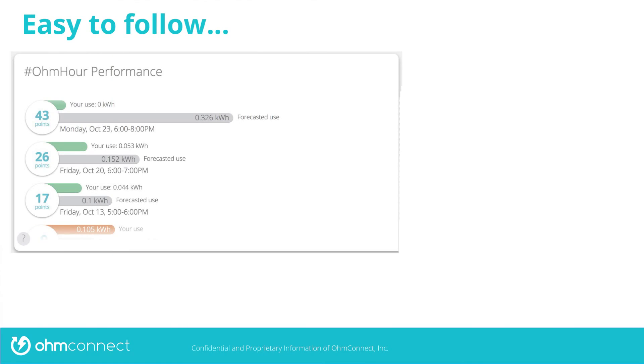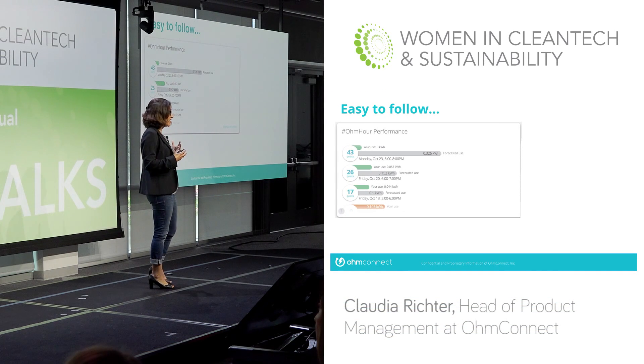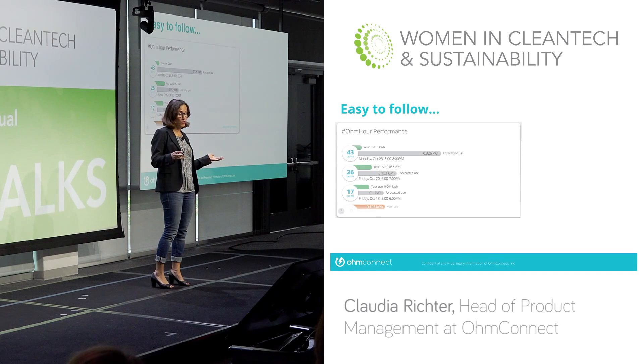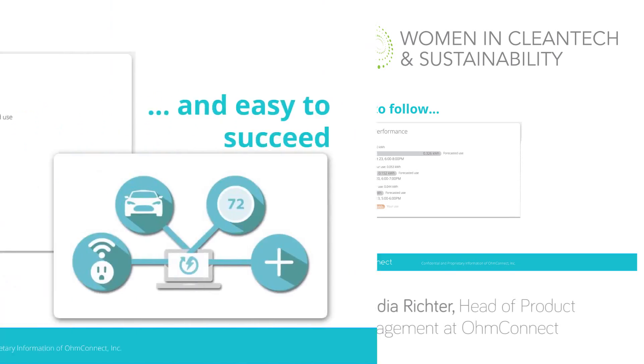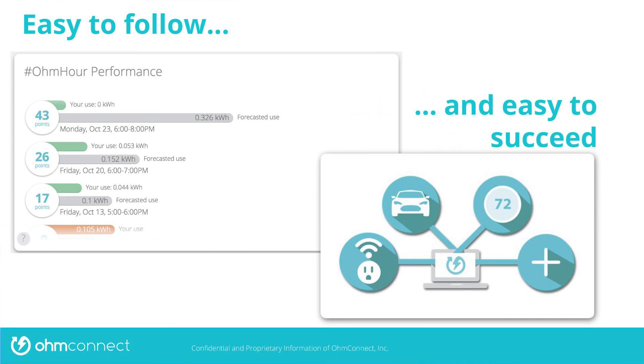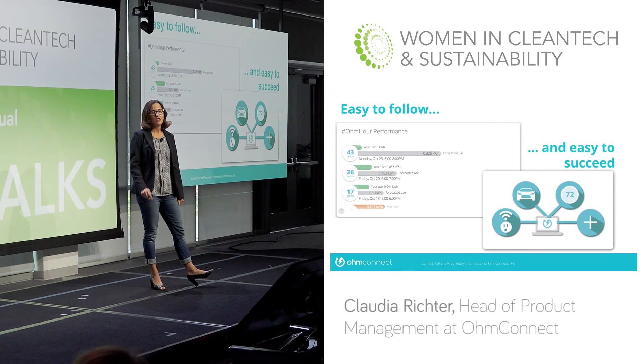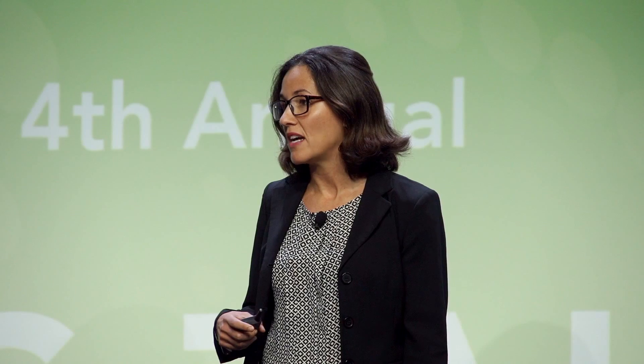We make it easy to follow by not showing users tons of data. Although we at OhmConnect really love data, we know that most users don't, so we limit what we show. We also make it easy for them to succeed by allowing them to connect their smart devices to OhmConnect. By connecting your Nest or Ecobee thermostat and putting major appliances onto a TP-Link smart plug, we can actually automate your reductions for you — so users don't even have to remember to shut things off in order to participate and drive energy savings.